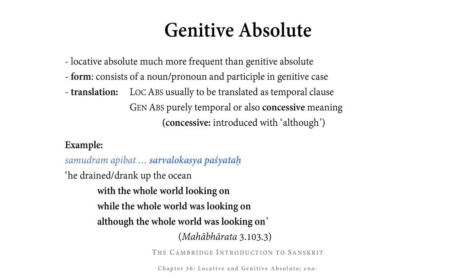As far as its translation is concerned, while the locative absolute is usually best translated as a temporal clause, the genitive absolute can be purely temporal and may need to be translated as a temporal clause, or it may also have concessive meaning — that is, a clause introduced with 'although.'